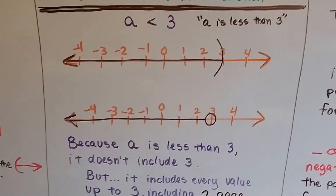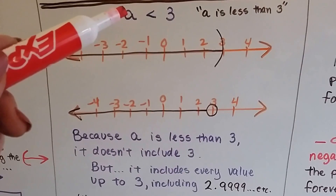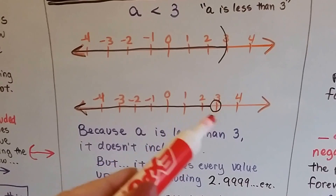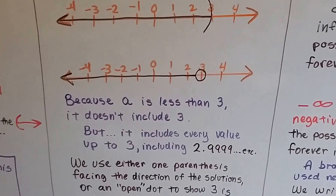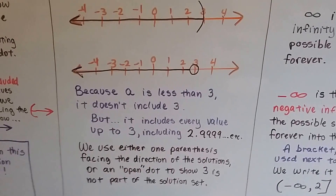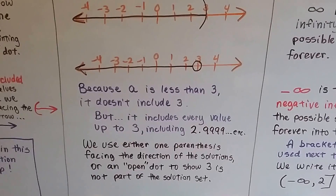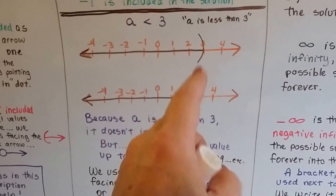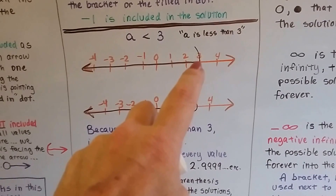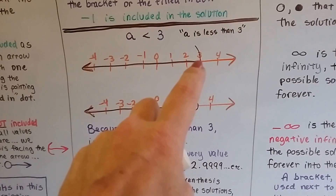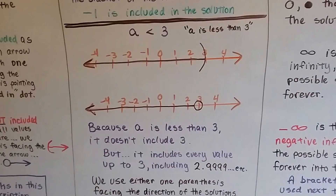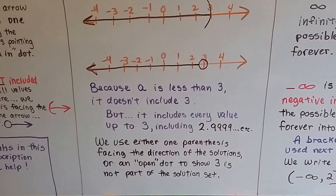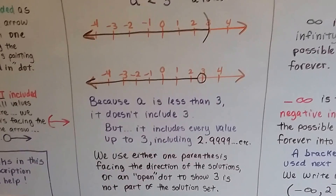We've got a is less than 3. That means a is every single number that's less than 3, but it doesn't include 3. So we have a parenthesis facing the direction of all the solutions, or we could use the open dot showing that 3 is not included but all the other numbers are. Because a is less than 3, it doesn't include 3 but includes every value up to 3 — including 2.99999 forever. The tiniest little number, even nanometer-size, that isn't quite 3. So we use either one parenthesis facing the direction of the solutions, or an open dot to show 3 is not part of the solution. I prefer the parentheses.